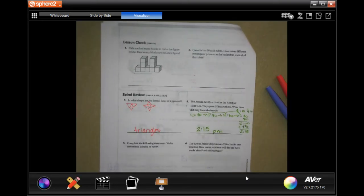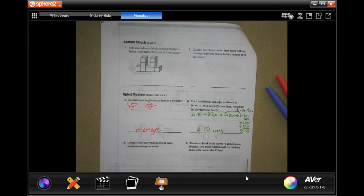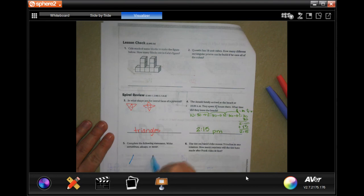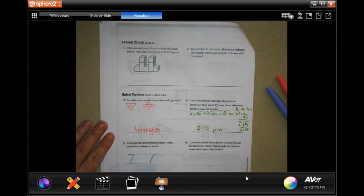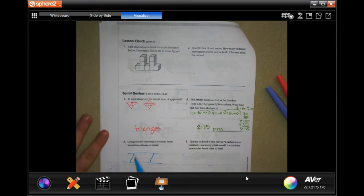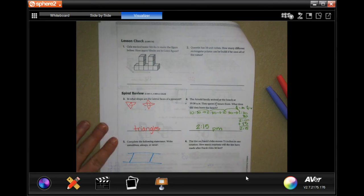Complete the following statement, right? Sometimes, always, or never. The opposite sides of a parallelogram are blank congruent. Opposite sides. That's a parallelogram. Always. They're always congruent.